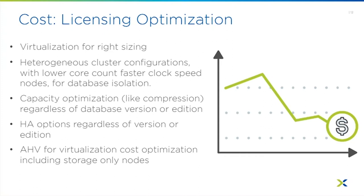We typically take all those segmented databases and consolidate them, saving on licensing — not just for databases but also OS licensing. You're also saving on management costs because you can manage more with the same number of people. Your admins aren't doing break-fix all day; instead of handling 15 tickets, they might handle 5, giving them more capacity.